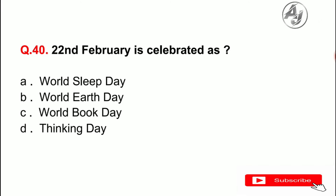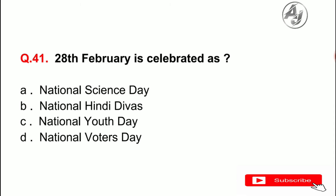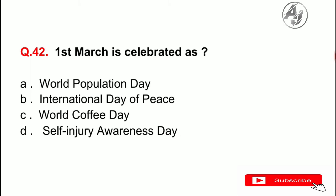Question number 40: 22nd February is celebrated as — the answer is D — Thinking Day. Question number 41: 28th February is celebrated as — the answer is A — National Science Day. Question number 42: 1st March is celebrated as — the answer is D — Self Injury Awareness Day.